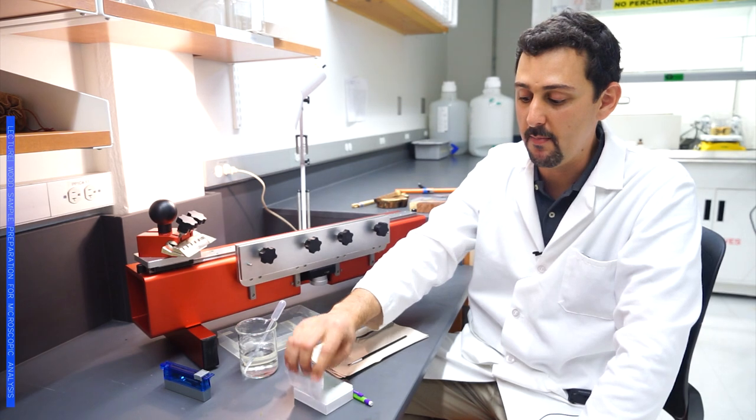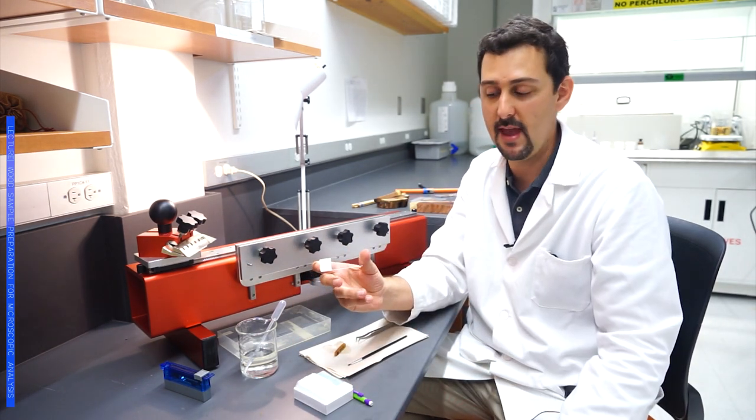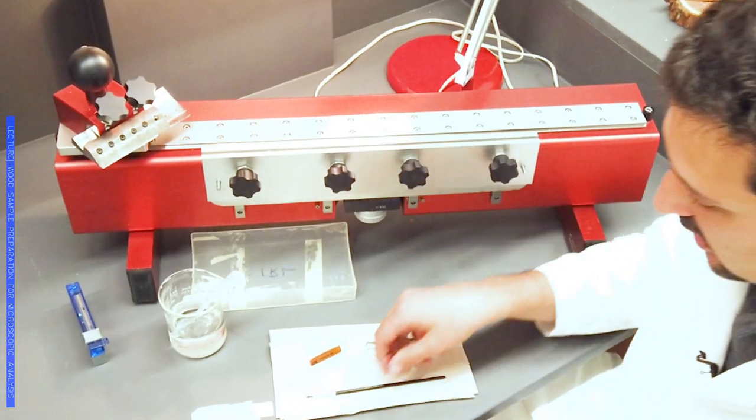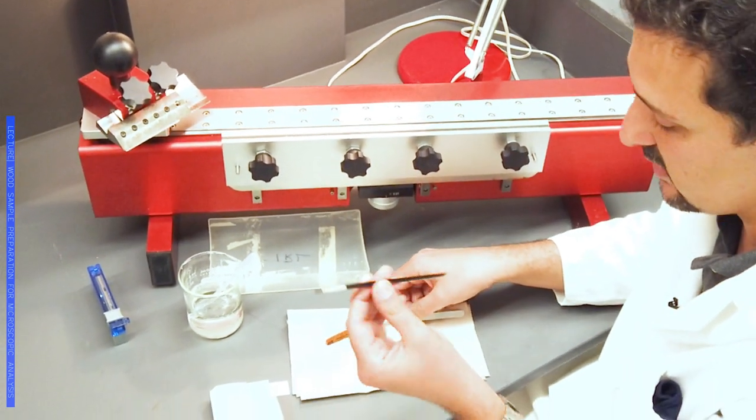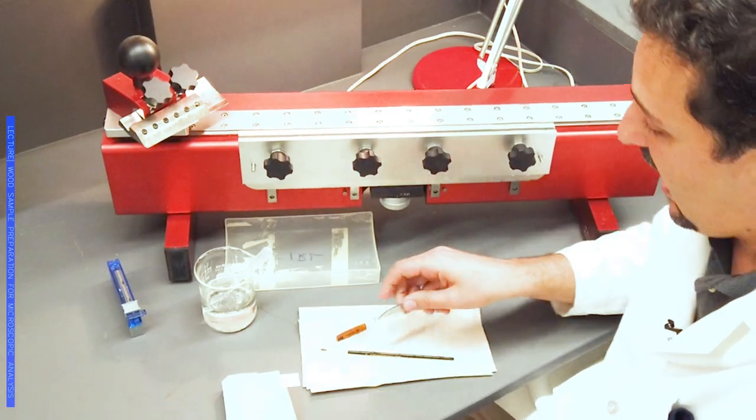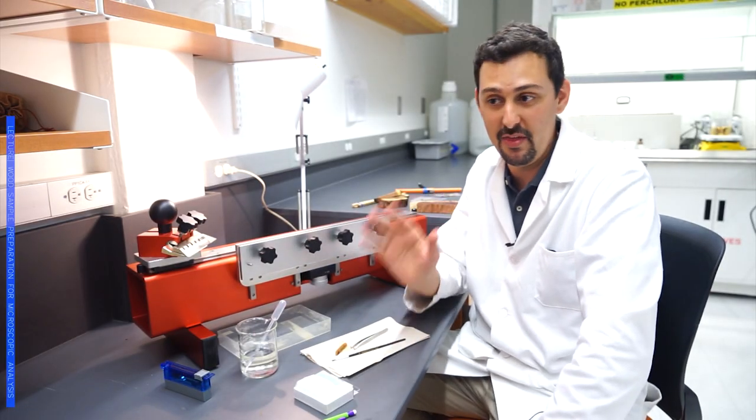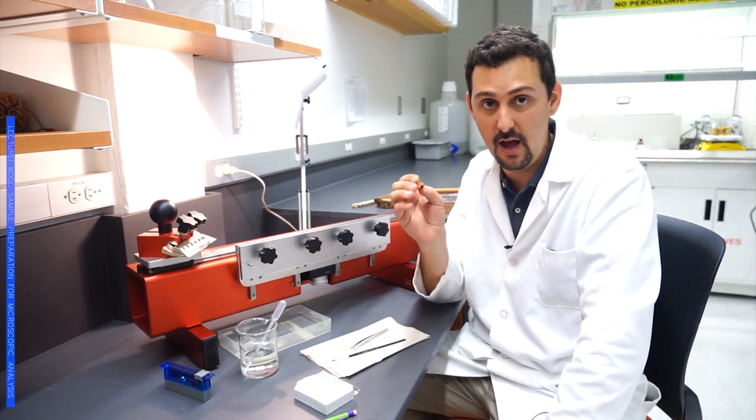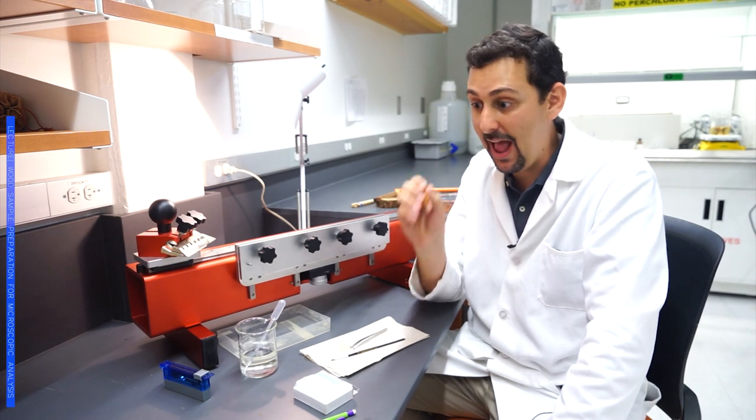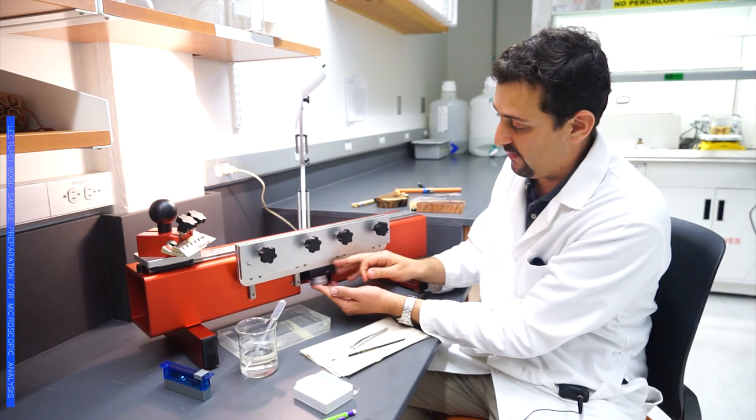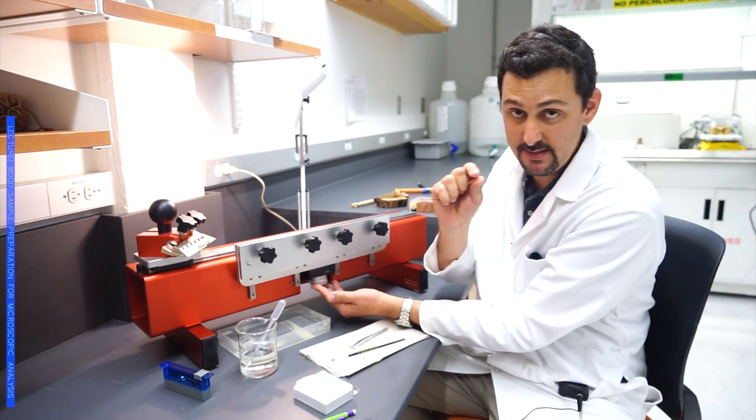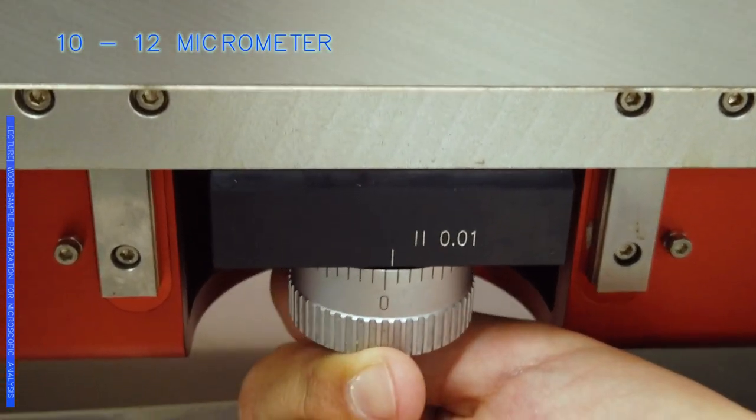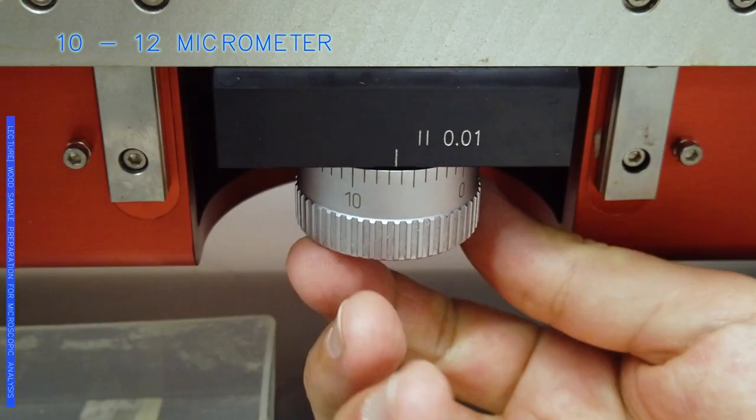The samples, we will put them on a glass slide like this one, where we will also write the name or code of our sample. We will help ourselves cutting with a little paintbrush like this one, and also a couple of tweezers. With that, and with a lot of practice and a little bit of talent, we will be able to get very thin cuts from this wood. Normally we will be cutting the wood from 10 to 12 micrometers. That's the thickness that we will need for this type of preparation.